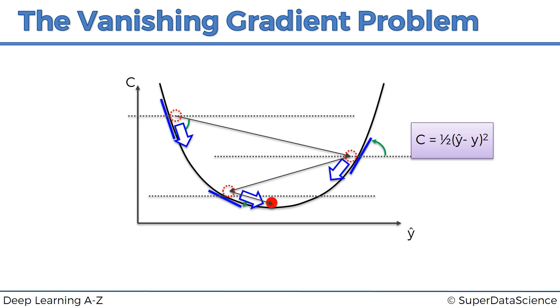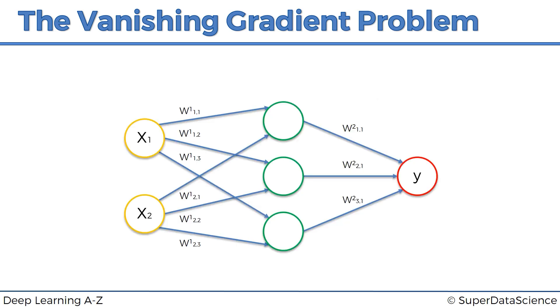Now we're proceeding to the vanishing gradient problem itself. As you remember, this is the gradient descent algorithm. We're trying to find the global minimum of your cost function, and that's going to be the optimal solution, optimal setup for your neural network. As you also recall, your gradient or your information travels through your neural network to get your output, and then the error is calculated and is propagated back through the network to update the weights.